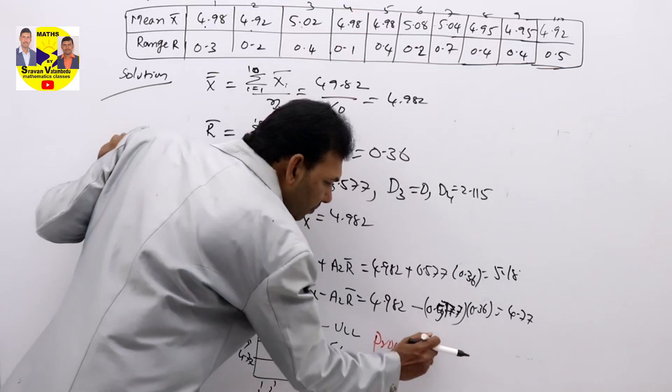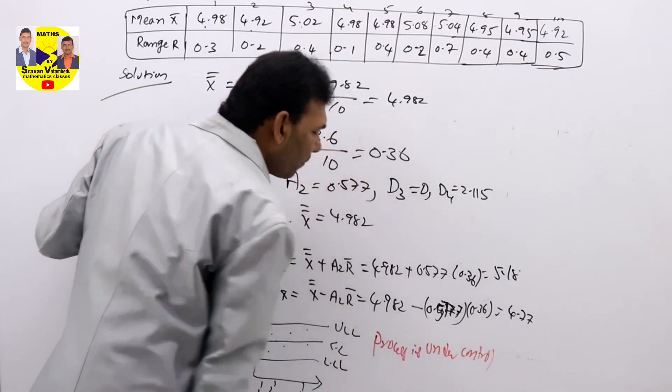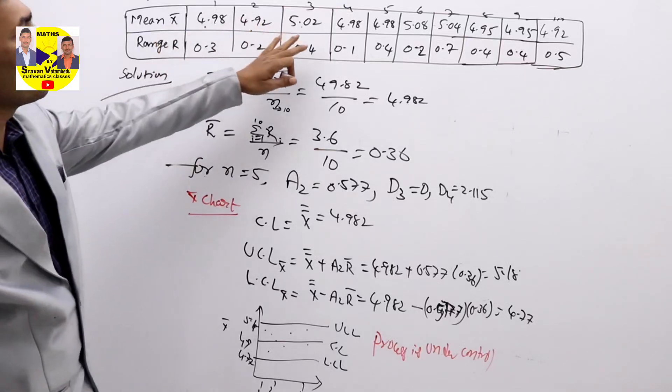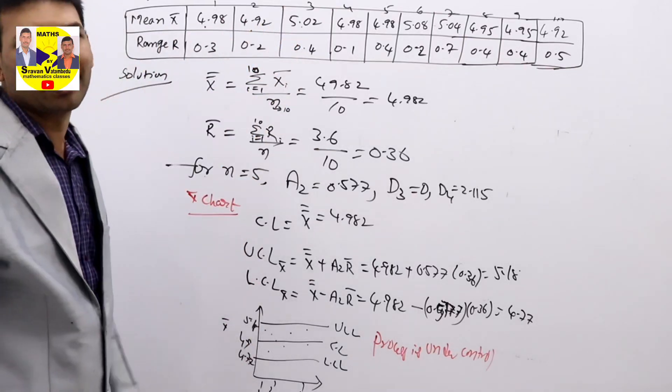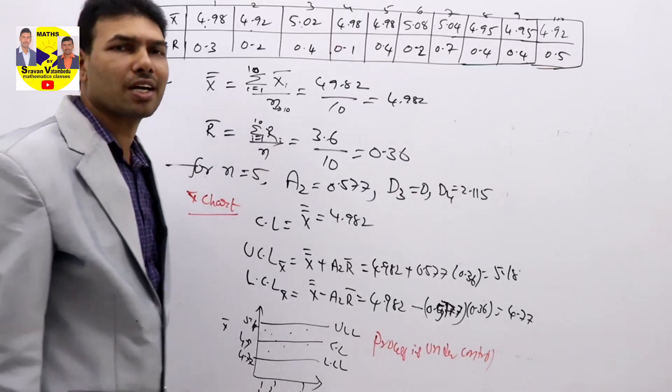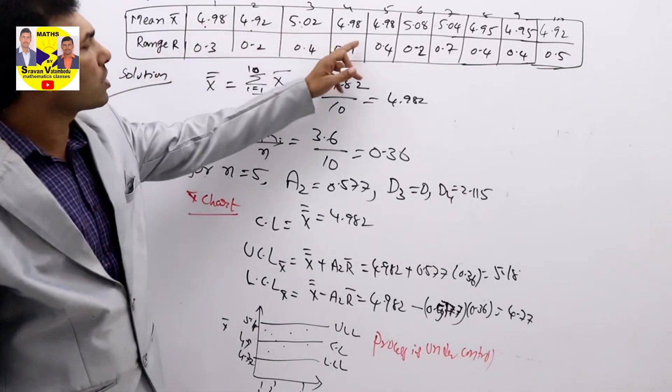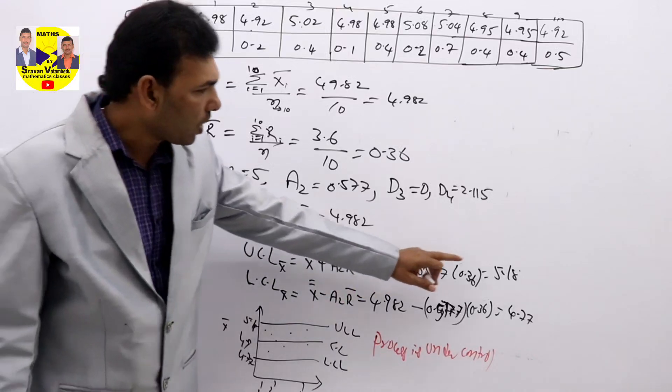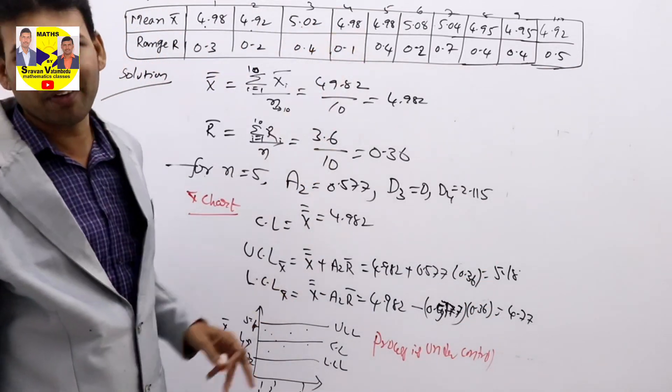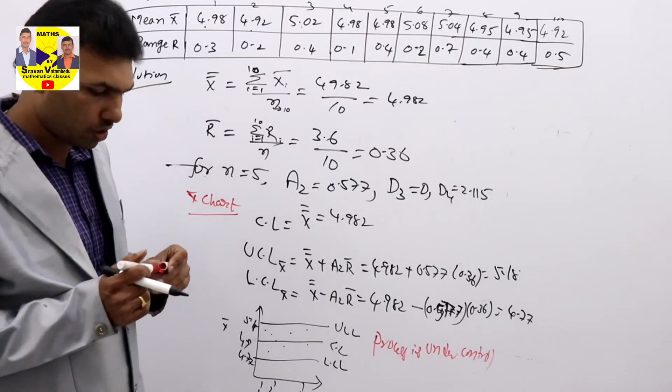When all the values are in between control lines, then process is under control. When all given mean values are between UCL and LCL, then we can say process is under control without drawing the chart. See here, all the values of X bar are between 5.18 and 4.77 in our given table. So, process is under control in X bar chart.